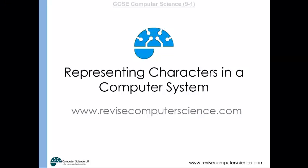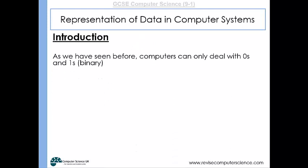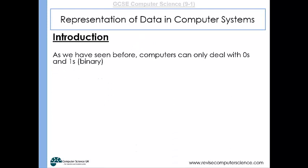This video will look at how characters are represented in computer systems. As we've already seen, the CPU is made up of lots of switches, and these switches can be in one of two states — they can be on or off. So computers can only really represent two digits: zeros and ones. Therefore, we have the binary number system.